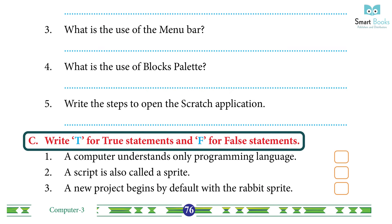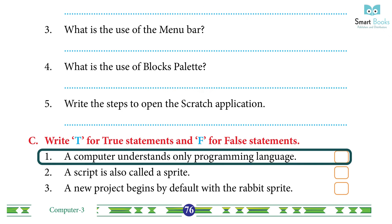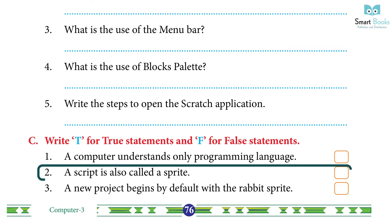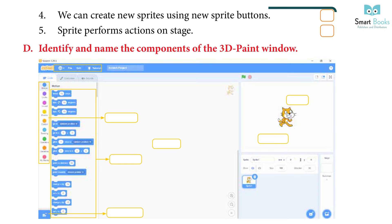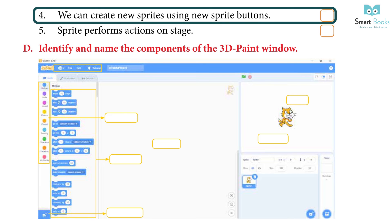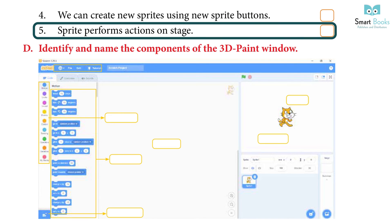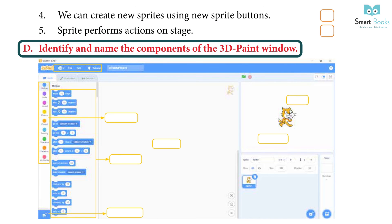C — Write T for true statements and F for false statements: 1. A computer understands only programming language — True. 2. A script is also called a sprite — False. 3. A new project begins by default with the rabbit sprite — False. 4. We can create new sprites using new sprite buttons — True.